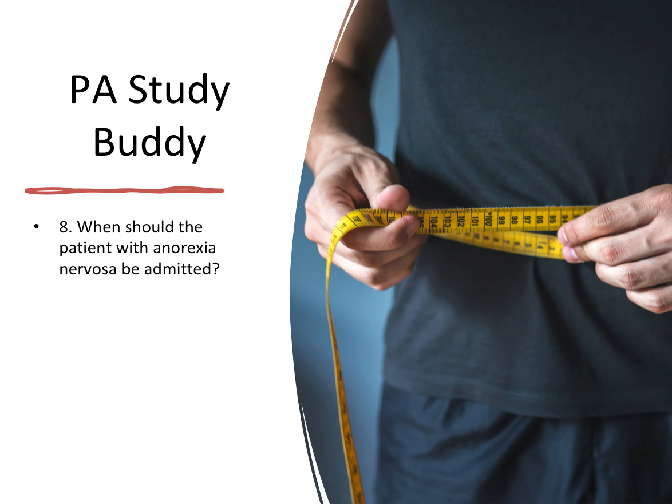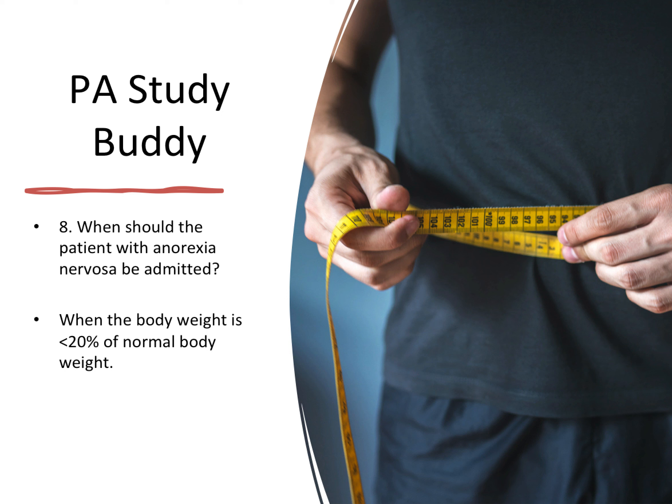Question eight: when should a patient with anorexia nervosa be admitted? They'll tell you this is an anorexic patient and ask when they should be admitted, giving you options like under 20%, under 10%, under 30%, or not at all. The answer is when body weight is less than 20% of normal body weight — you're looking for less than 20%.